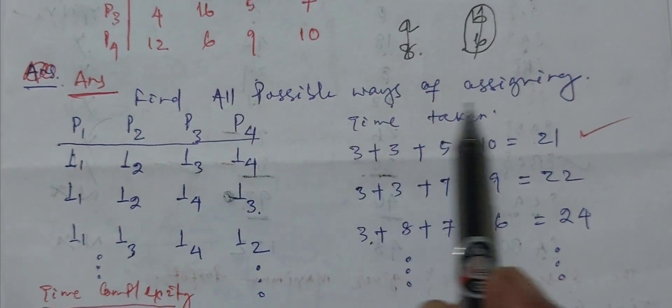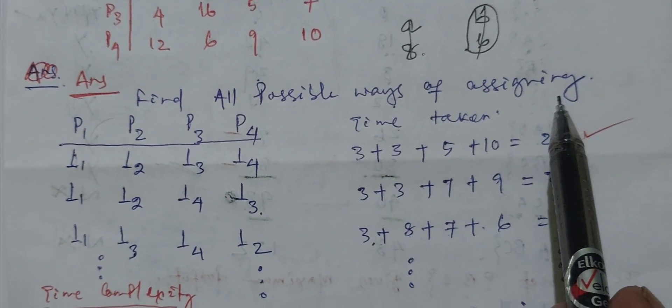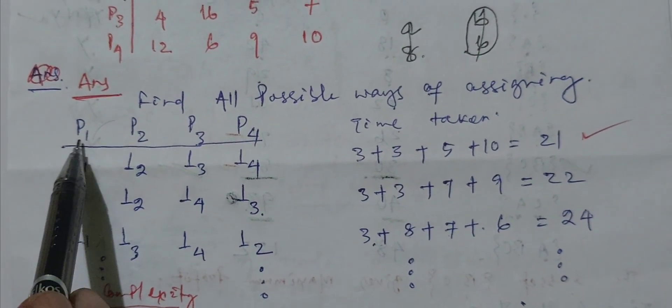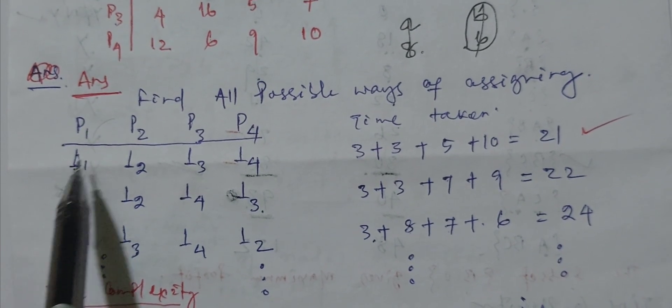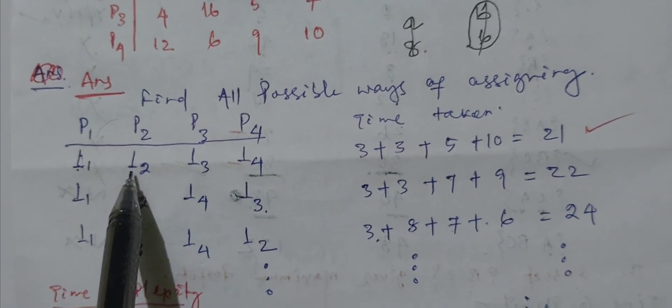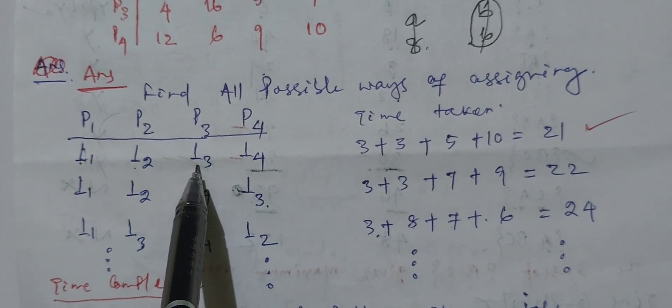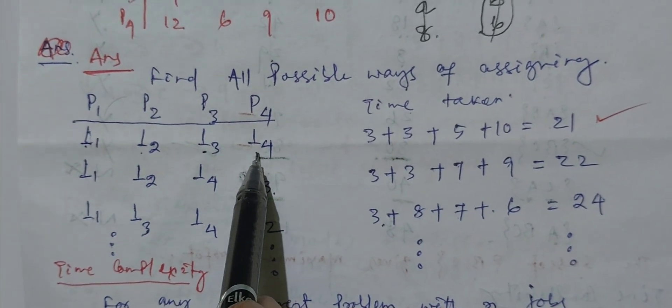So first find all possible ways of assigning. Person 1 is given job 1, person 2 is given job 2, person 3 is given job 3, person 4 is given job 4.